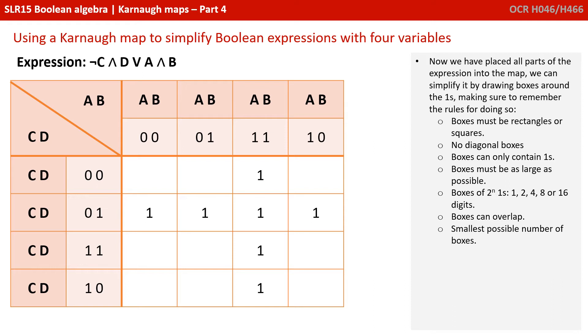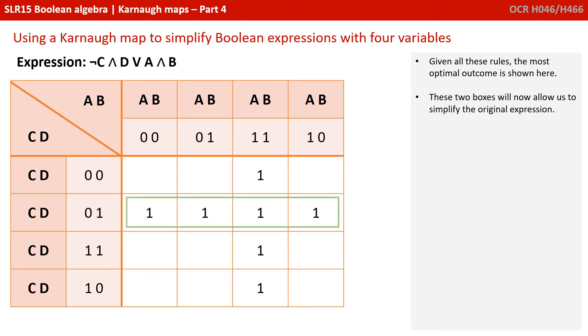Now we've placed all parts of the expression into the map, we can simplify it by drawing boxes around the ones, making sure to remember the rules we've already covered for doing so. Given all these rules, the most optimal outcome is shown here. The two boxes will now allow us to simplify the original expression.